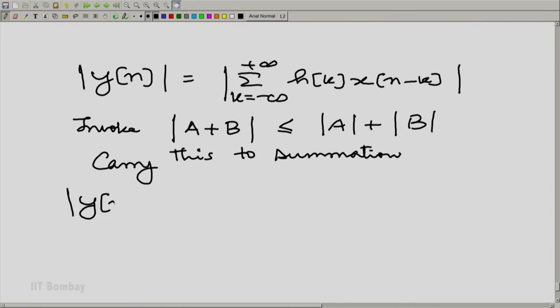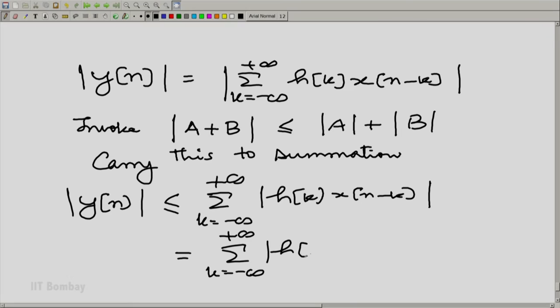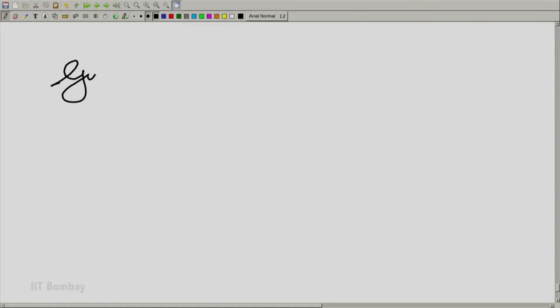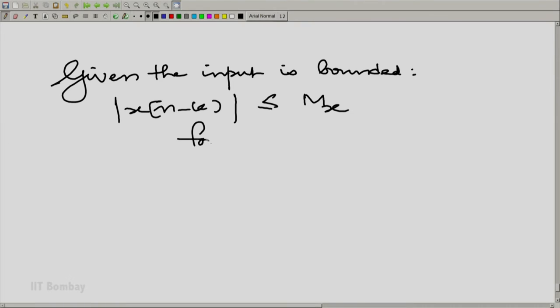Carry this to the summation, which means mod y(n) is less than or equal to summation k going from minus to plus infinity, mod h(k) x(n-k). And this is the same as summation k going from minus to plus infinity, mod h(k) mod x(n-k). And given the input is bounded, mod x(n-k) is less than or equal to M_x.